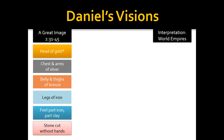Daniel explains in Daniel 2 that God is giving him a vision of the future world empires that are going to follow from that time on. In Daniel 2:37, Daniel says: 'You, O king, are a king of kings. For the God of heaven has given you a kingdom, power, strength, and glory. And wherever the children of men dwell, or the beasts of the field, and the birds of the heaven, he has given them into your hand, and has made you ruler over them all.'